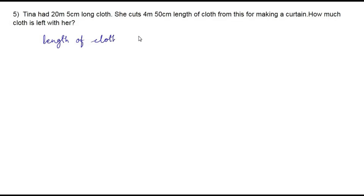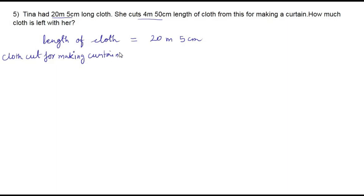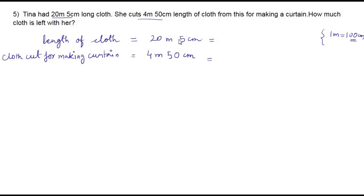Let's write the statements. Length of cloth equals 20 meter 5 centimeter. Cloth cut for making curtain equals 4 meter 50 centimeter. Here the numbers are in two different units — meter and centimeter. To solve this, we need to convert them into meters. We know that one meter equals 100 centimeter, so the centimeter part is always represented with two digits. Here we have only one digit for 5 centimeter, so we add one zero to make it 05.